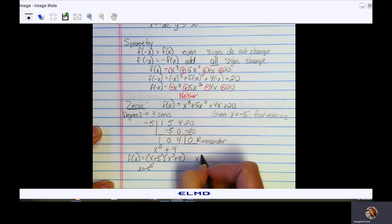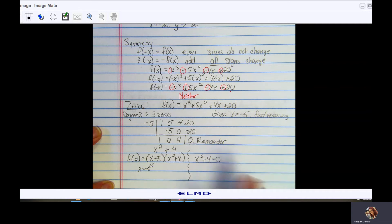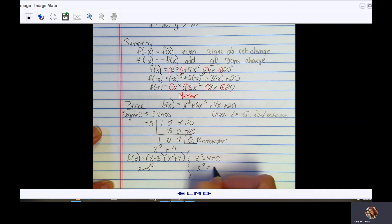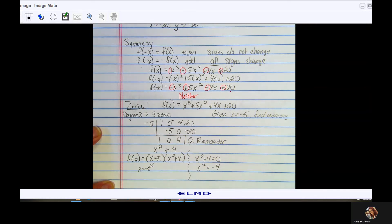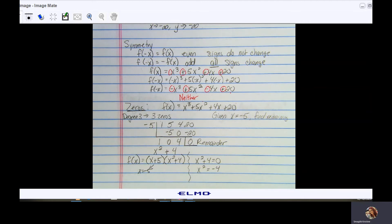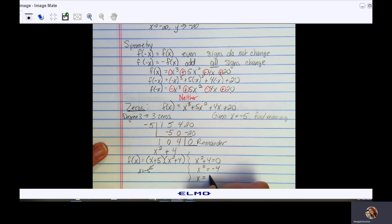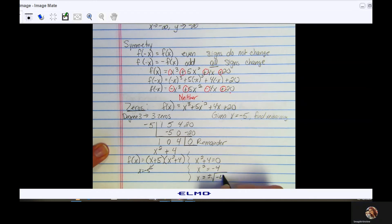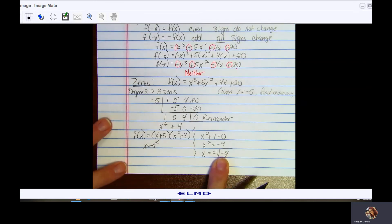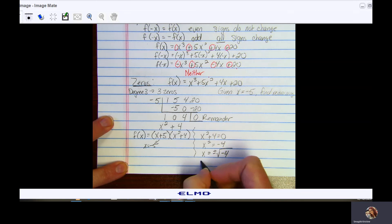So if I have x squared plus 4, I'm using my zero product property. In order to solve for my zeros here, I'm going to subtract 4 from both sides. Now to clear that square, I would take the square root of both sides. Notice you have a negative under the radical. If you have a negative under the radical, you're going to have a complex solution. That negative comes out as an i.